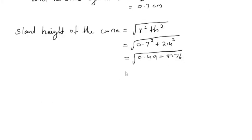0.7 square is 0.49 plus 2.4 square is 5.76 under the root. Adding these two we get 6.25 under the root, which is equal to 2.5. So the slant height of the conical cavity is 2.5 cm.